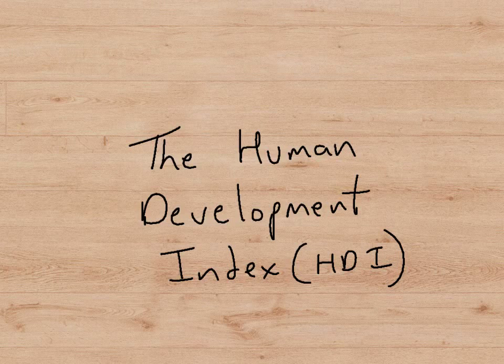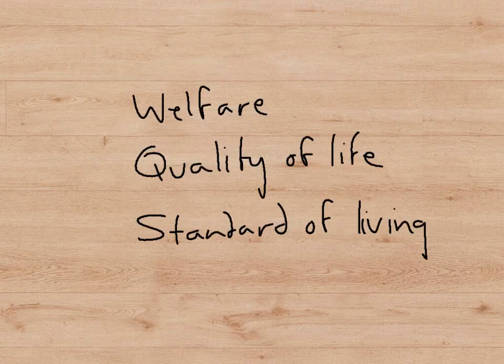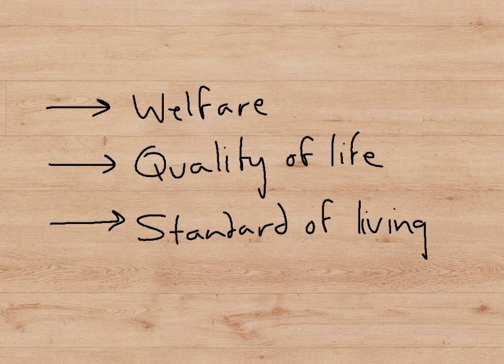This presentation is about the Human Development Index, or HDI, which is a way of measuring the welfare of people. Let's look at what we've been talking about in recent presentations. We've been using and describing words like welfare, quality of life, standard of living.